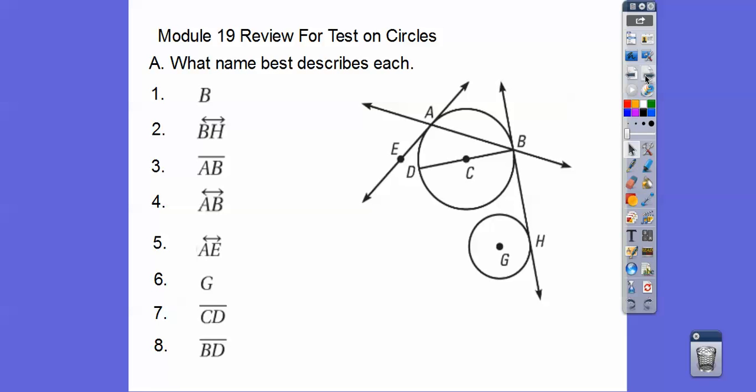What name best describes each? So here's a figure, point B. Point B looks like since this is a tangent, this would be the point of tangency right there.